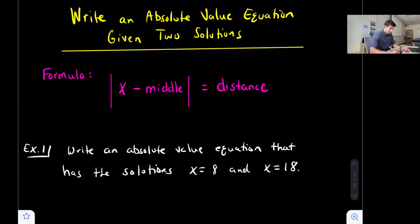In this video we're going to look at how to write an absolute value equation given two solutions. There's a pretty straightforward formula for this: the absolute value of x minus the middle is equal to the distance.